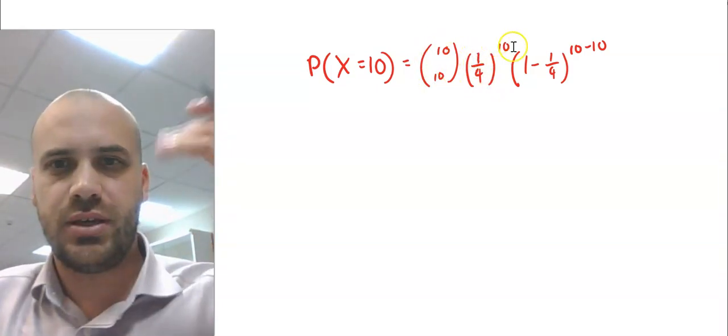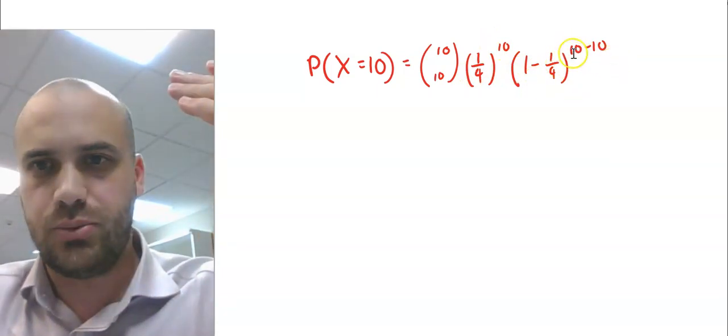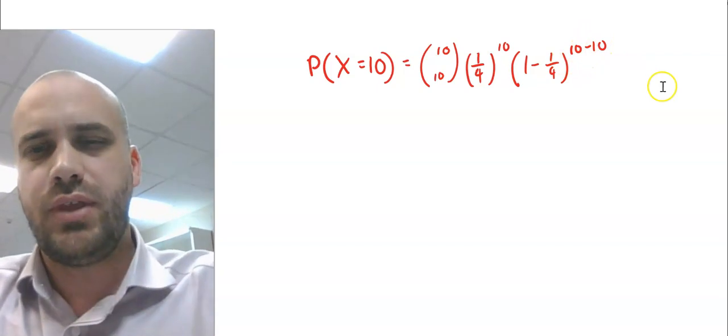1 quarter, because that's probability of success to the power of 10, 1 minus 1 quarter to the power of 10 minus 10, which is, of course, 0.